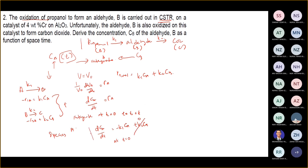So you just integrate this one in order to get CA. You will get CA = CA0 · e to the power of negative K1·T.